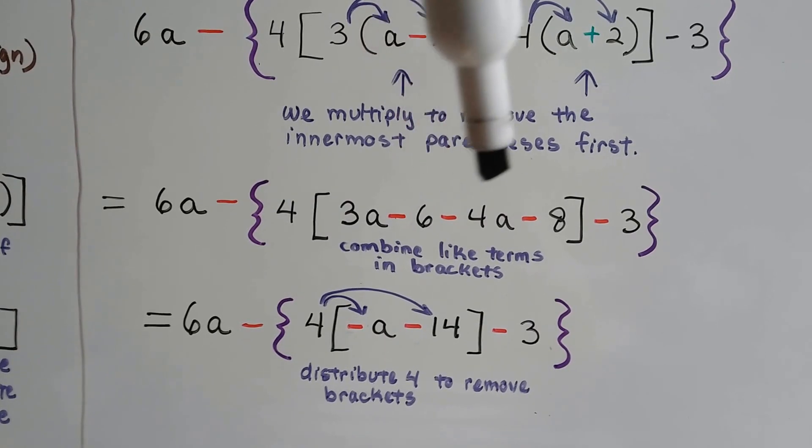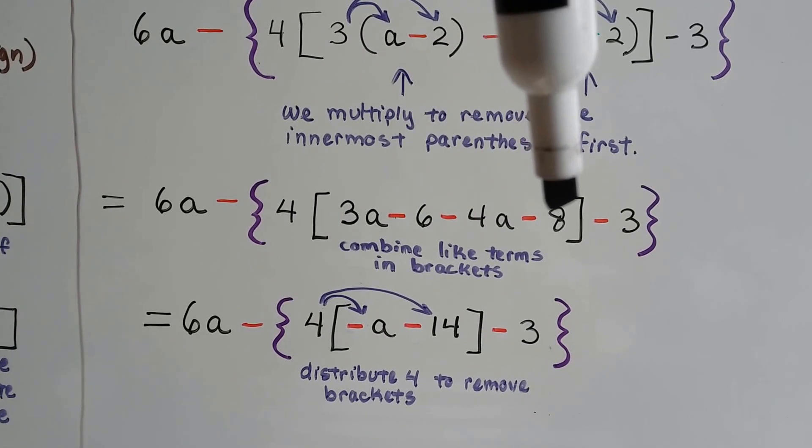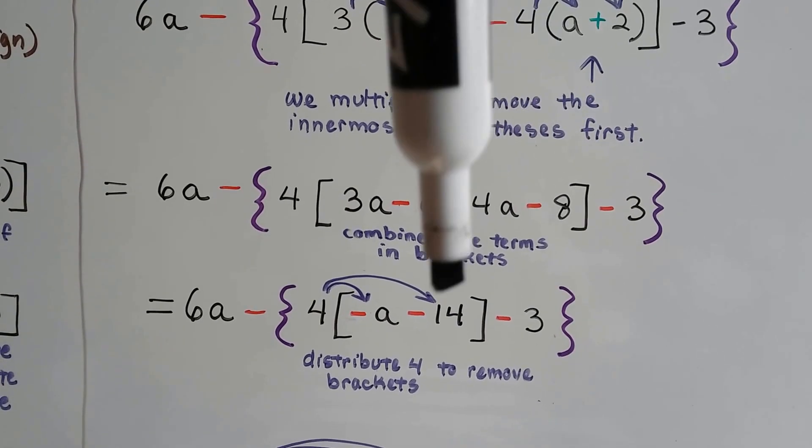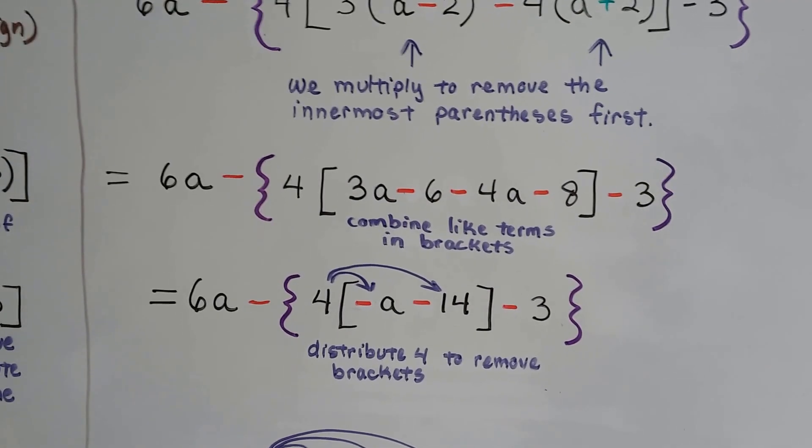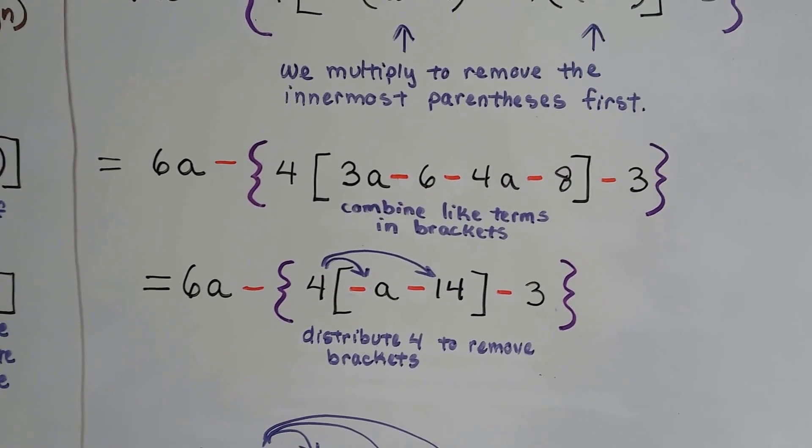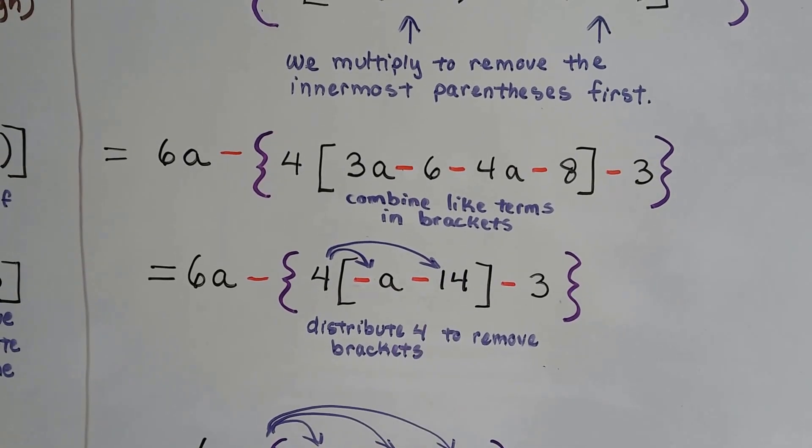And when you have a negative 6 and you take away an 8, that gives us a negative 14. Or you could look at it as negative 6 plus negative 8. Either way, it's a negative 14.